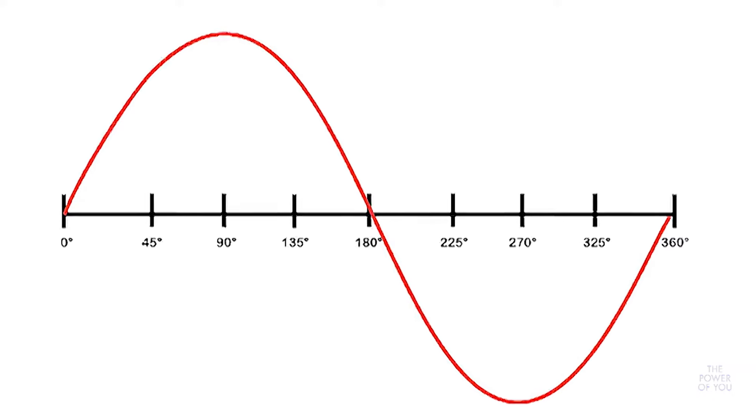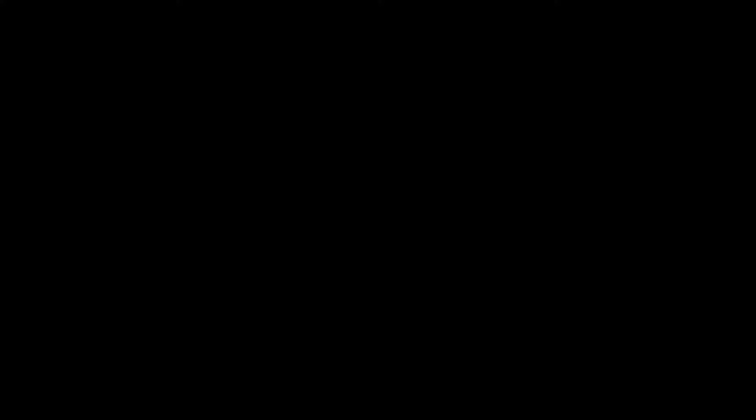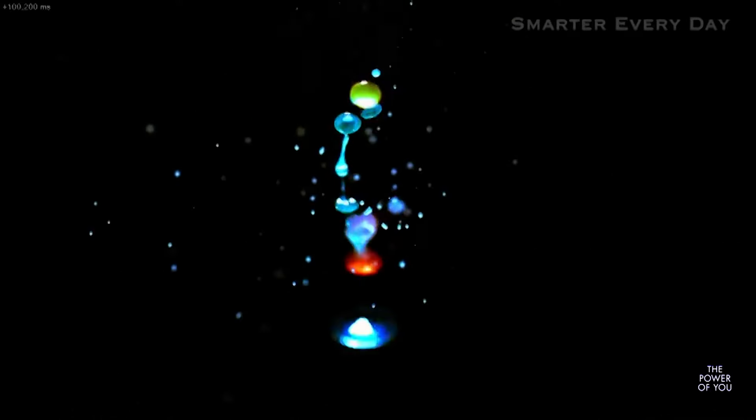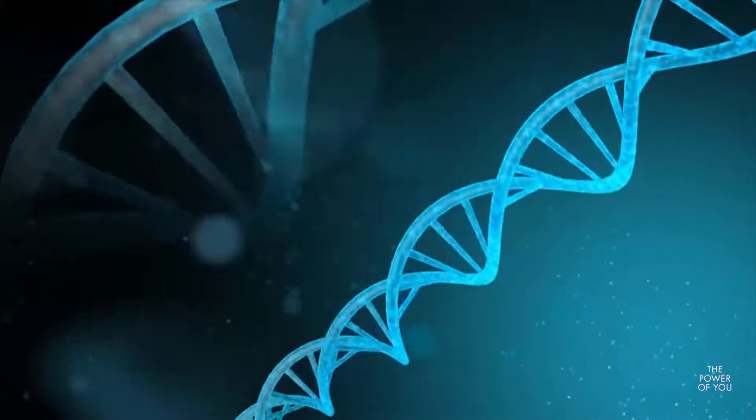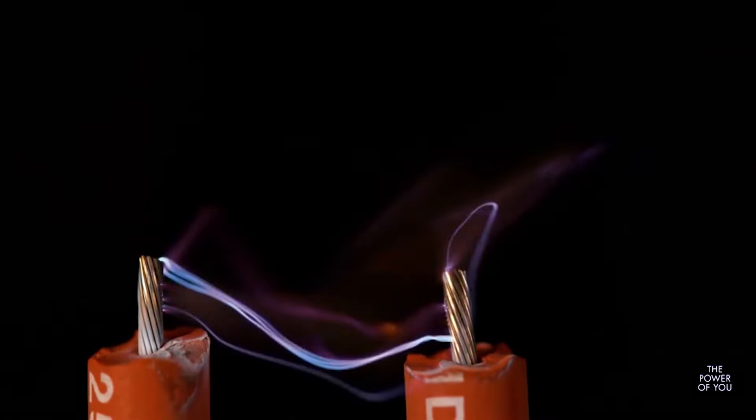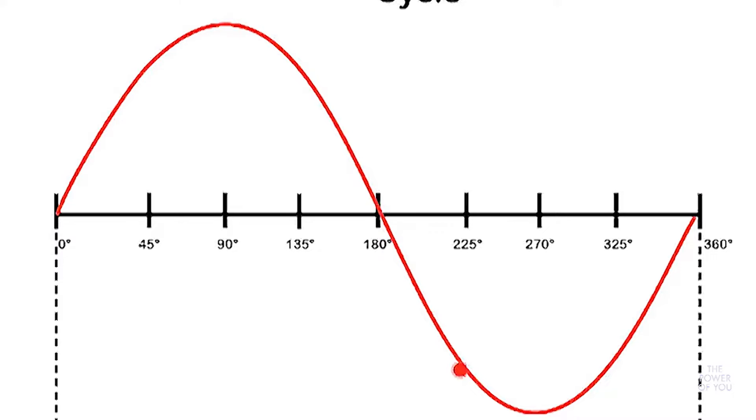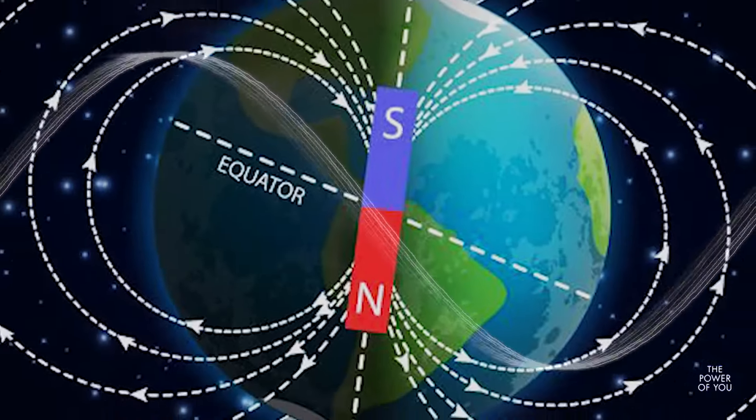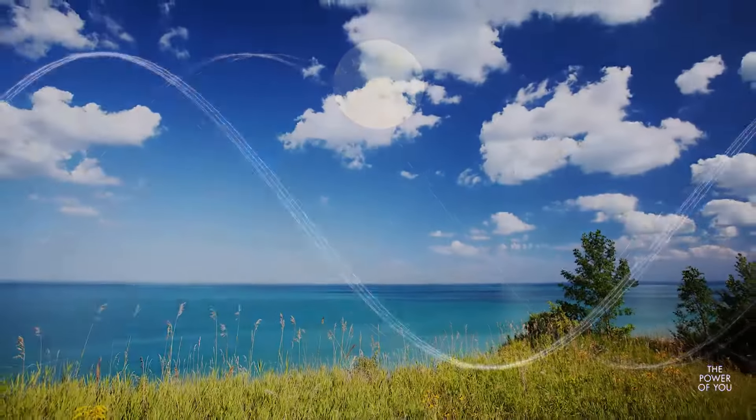To have a wave, you need two poles. Otherwise, nothing would simply exist. Everything you live are waves submitted in two poles: positive, negative; north, south; day, night; hot, cold.